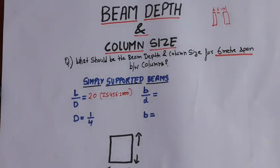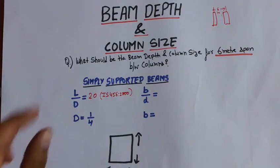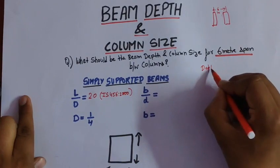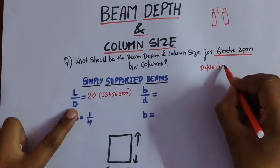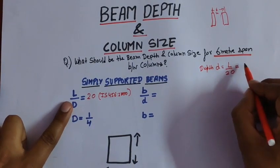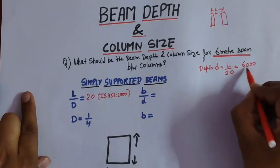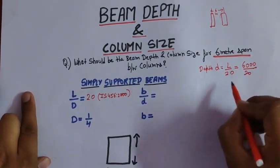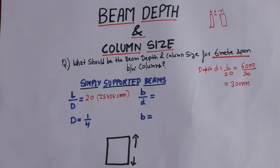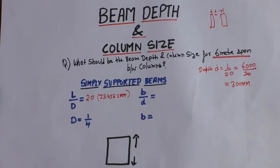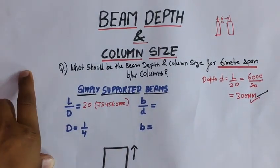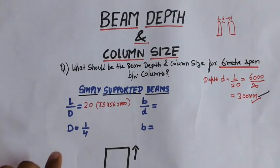We will calculate the value of D — the overall depth. The effective depth is L divided by 20. Our value comes out to be 300 mm, since L equals 6000 mm divided by 20 equals 300 mm.